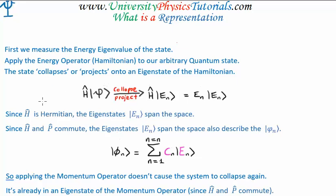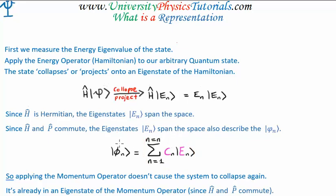Quantum operators must be Hermitian, so the Hamiltonian is a Hermitian operator with real eigenvalues. As a consequence, the eigenstates of Hermitian operators are able to span our Hilbert space — they act as a basis or representation for other states. Since the Hamiltonian and momentum operators commute, the energy eigenstates span the space and can also describe the momentum eigenstates, by taking a linear combination of the energy eigenstates. In this sense, there is no distinction between the momentum and energy eigenstates, because you can always get a momentum eigenstate by taking linear combinations of the energy eigenstates.